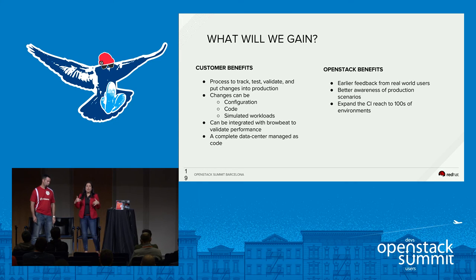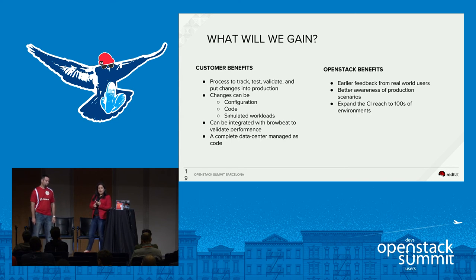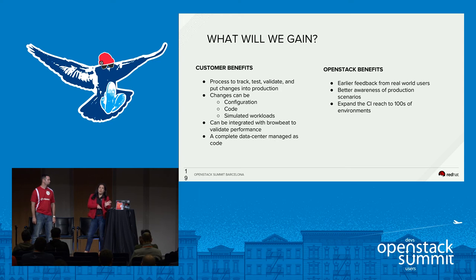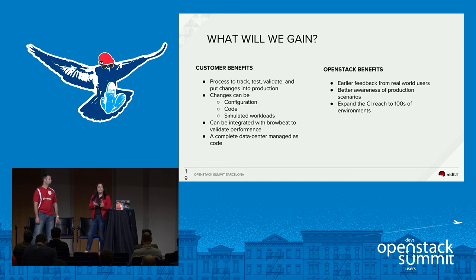What's in it for you? How do customers and partners benefit? You can track and test all of your changes — your configuration, new code, simulated workloads, whatever you're doing. You can integrate with tools like BrownBeat to do even more rigorous testing and benchmarking, seeing how your OpenStack cloud behaves before a change, after a change, and after a certain amount of time after that change — giving you more data to work with and make decisions with.